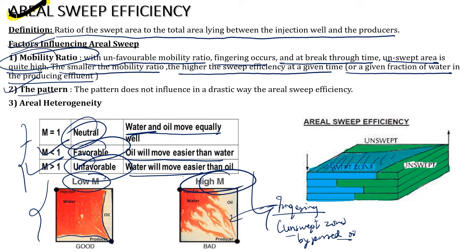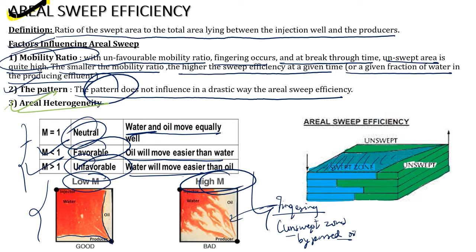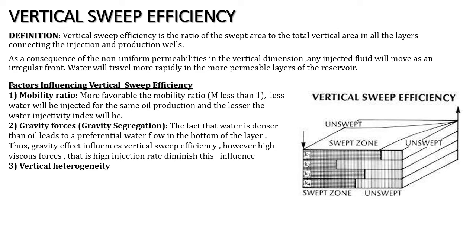Pattern does not influence aerial sweep efficiency in a drastic way. Coming to aerial heterogeneity — this plays a major part. If I have a discontinuity in the sand, this can lead to reduction in aerial sweep efficiency. If I have a high permeability streak, my water will try to flow through that streak only instead of sweeping the entire reservoir, leading to reduction in aerial sweep efficiency and high amounts of bypassed oil in the reservoir.